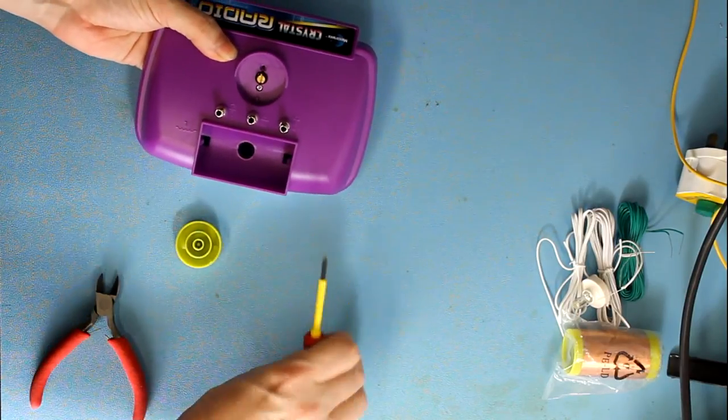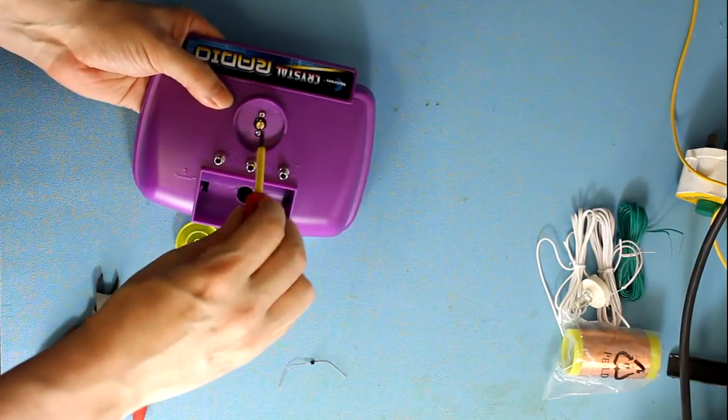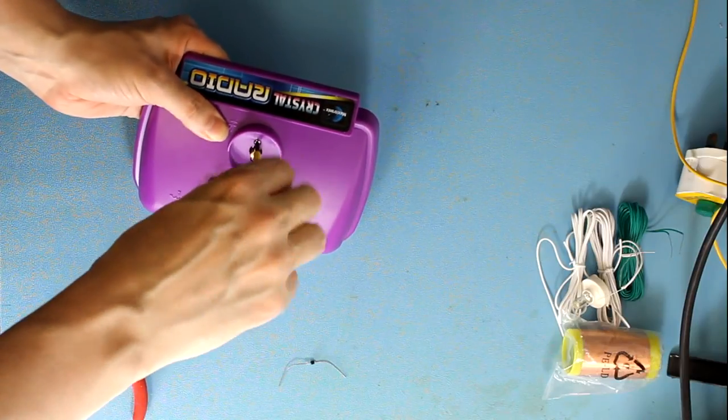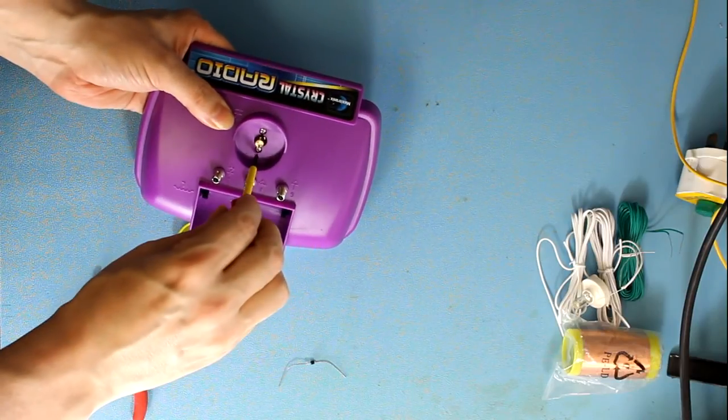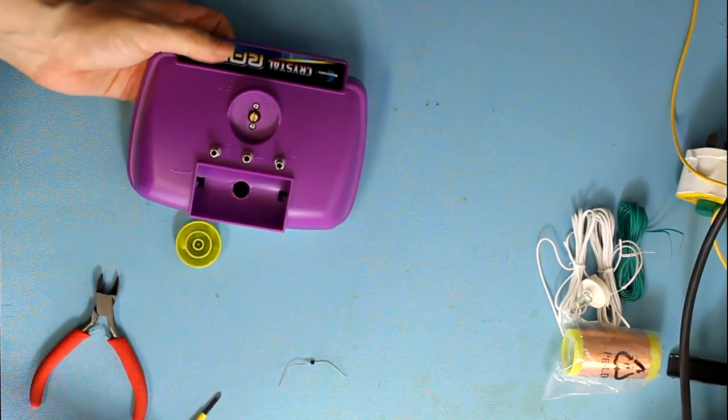Now don't do them up tight yet. Pop the second one in. If you did the first one tight and it was out of alignment it would be very hard to line the second one up. So tighten them both up now. And that's them in.